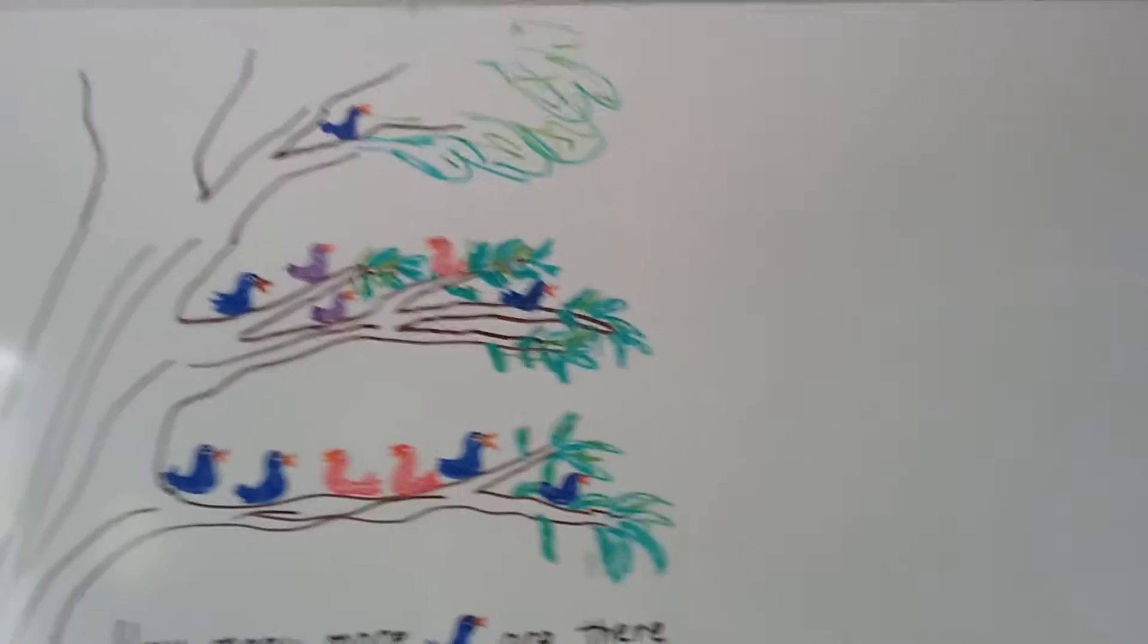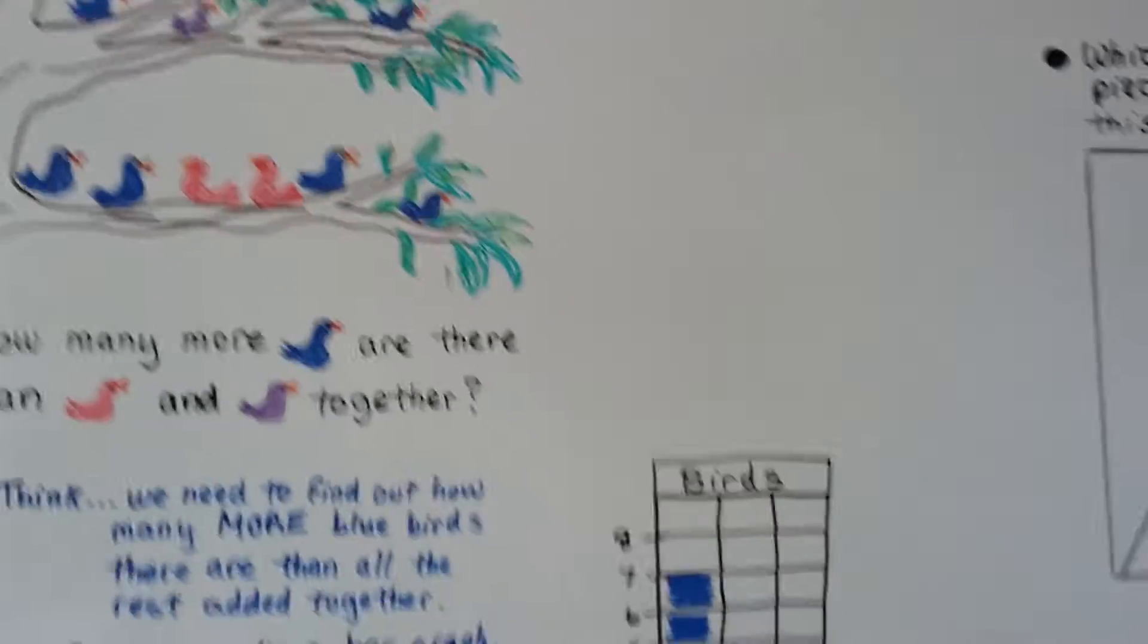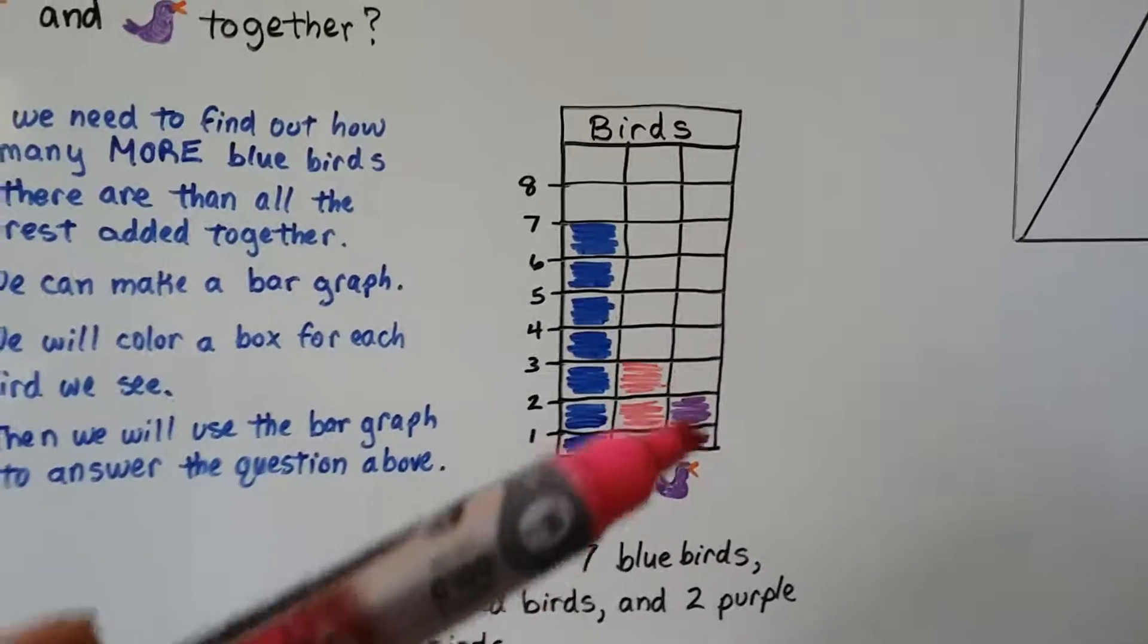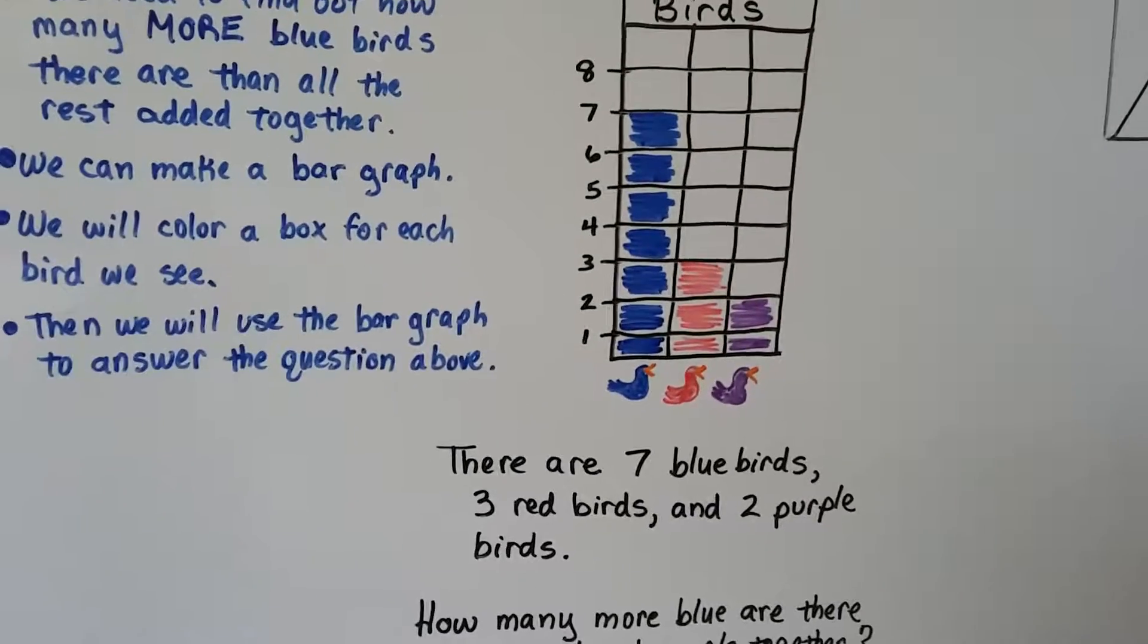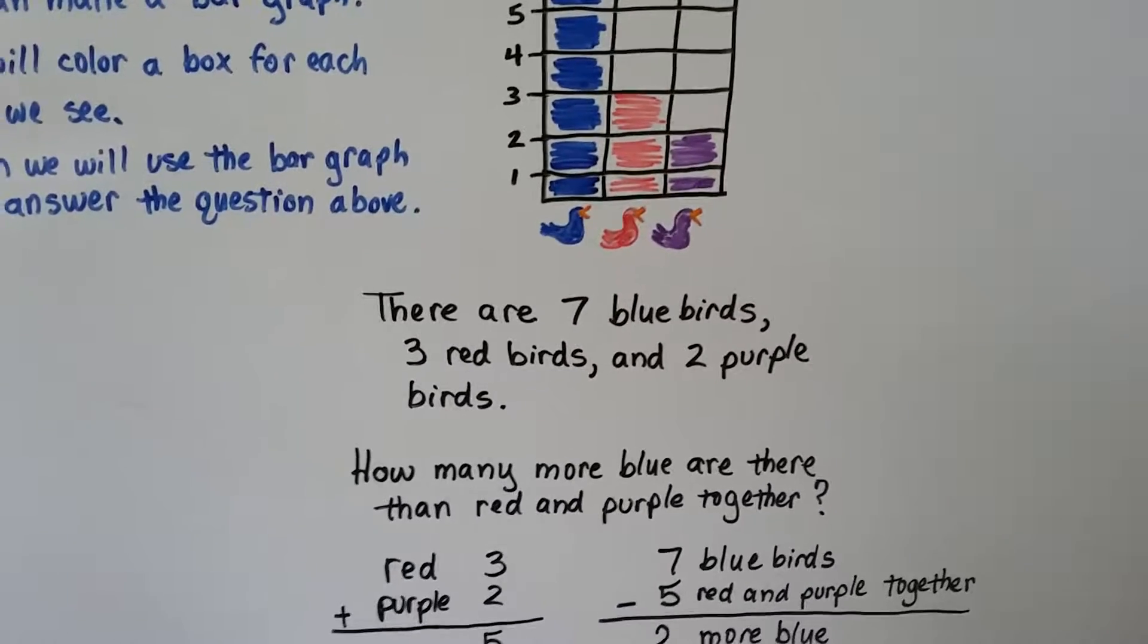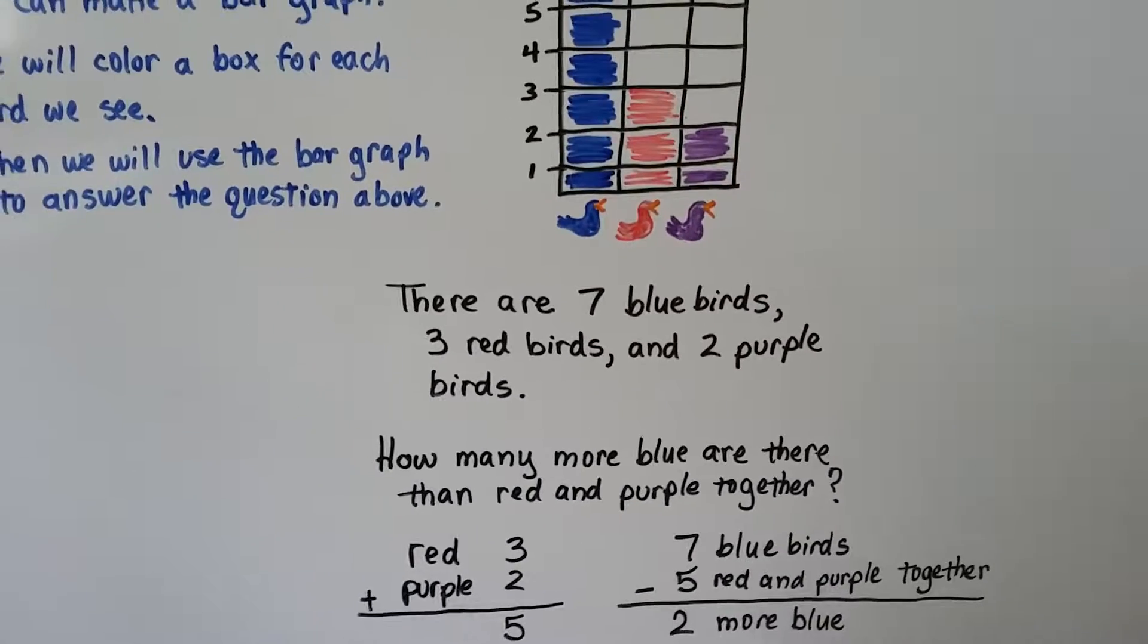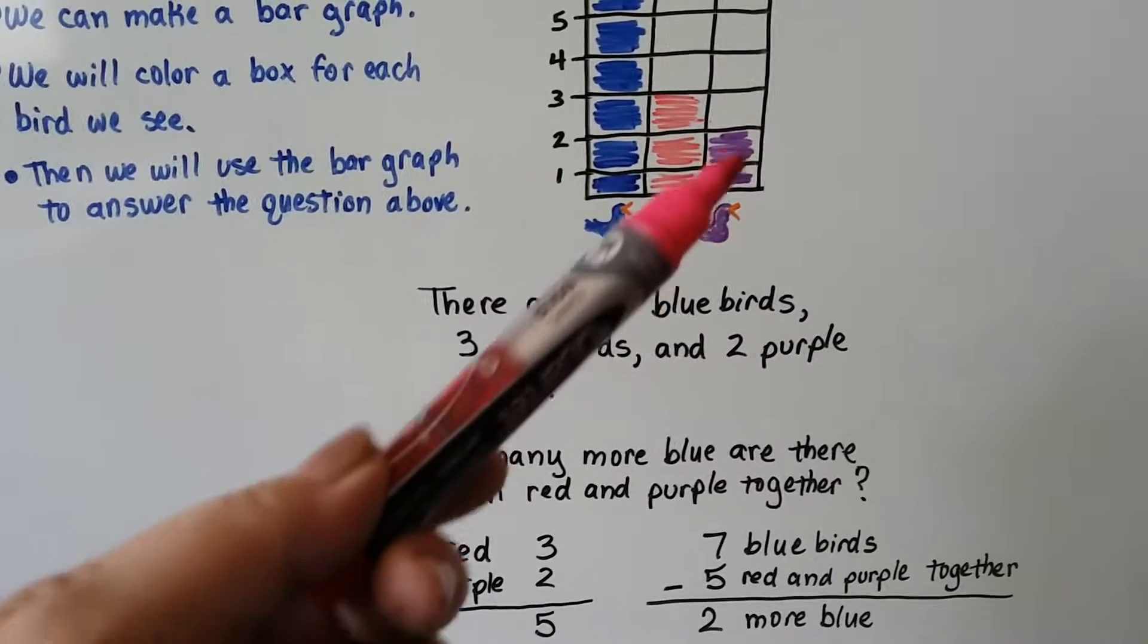We count the purple ones. There's two purple ones right in the middle here. And we fill in two boxes for two purple birds. So now we know there are seven bluebirds, three red birds, and two purple birds. So how many more blue are there than red and purple together? Well, how many are there for red and purple together? There's three red and two purple.